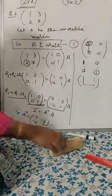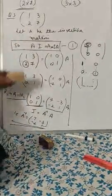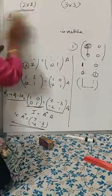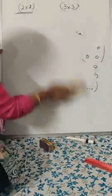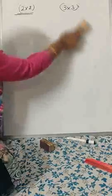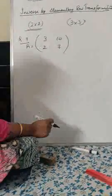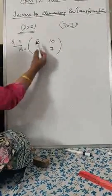When you get the identity matrix on the LHS, the right-hand side will be your inverse. So A⁻¹ = [7, −3; −2, 1]. That is your answer. I will show you one more question because in this question two steps were already done conveniently.